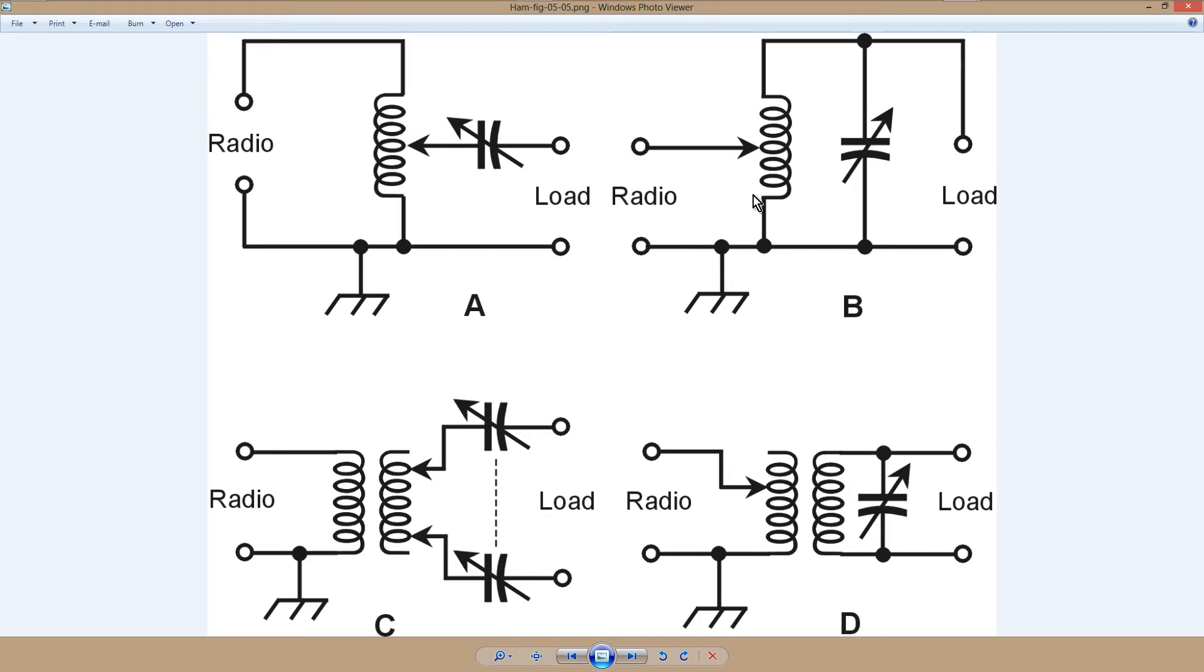So these tuners are intended for those situations where you have a high standing wave ratio, in cases A and B on coaxial cable, and in cases C and D on balanced wire line.